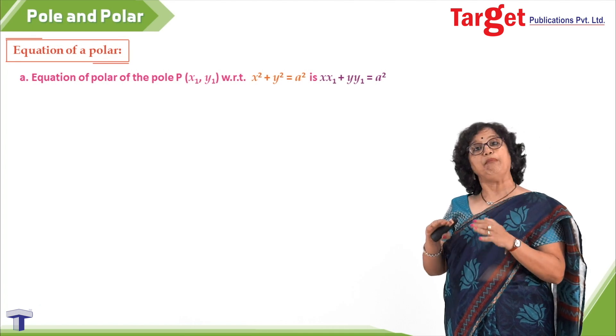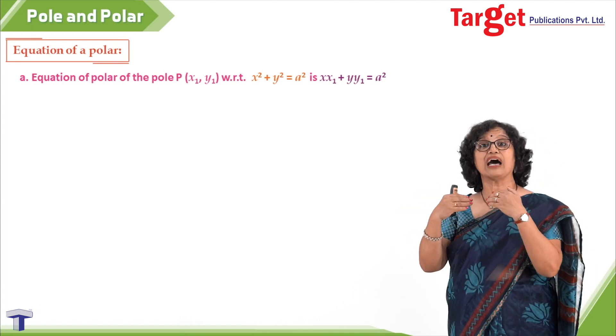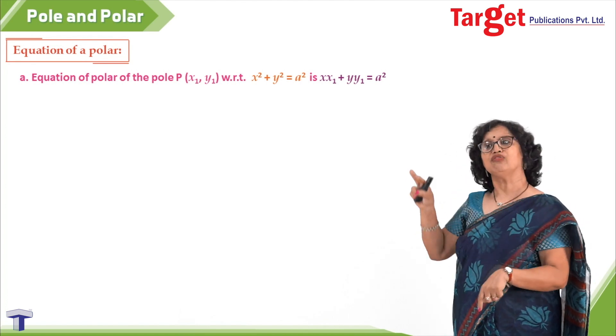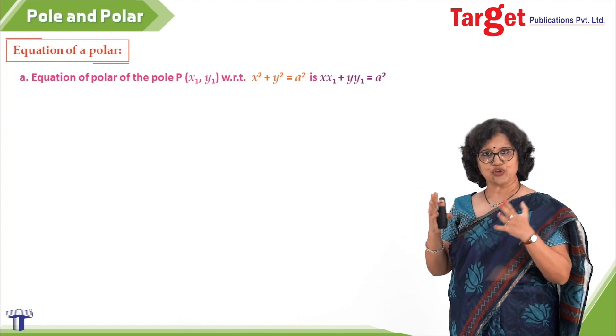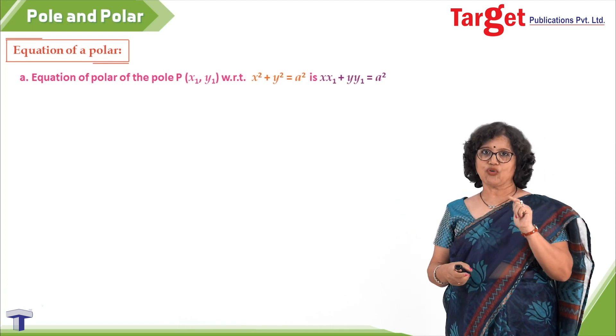Had you taken point P outside, then you would have understood the meaning that we are talking about chord of contact only. And chord of contact's equation was the same: xx₁ + yy₁ = a². But actually, polar is a more general expression rather than chord of contact.